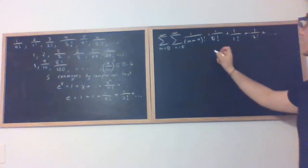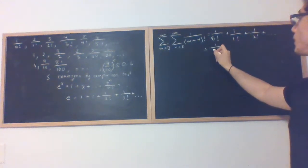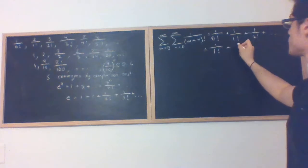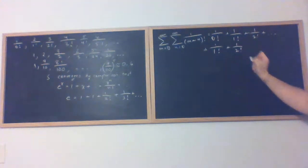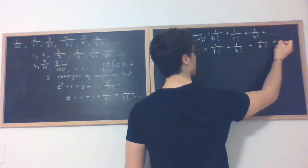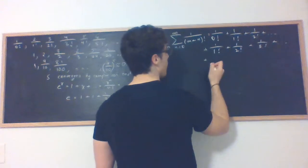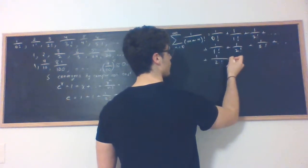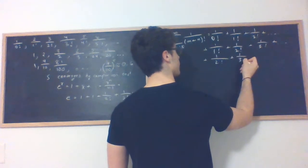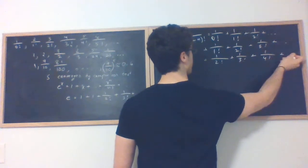Now next line would be m equals 1, so we'd start with 1 over 1 factorial plus 1 over 2 factorial plus 1 over 3 factorial and so on. And why don't we do one more line. 1 over 2 factorial plus 1 over 3 factorial plus 1 over 4 factorial. And it will continue on.